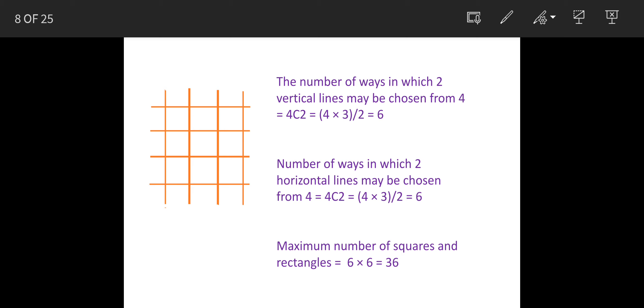So we will see the solution. Now the number of ways in which 2 vertical lines can be chosen from 4 is 4C2. So 4C2 will be factorial 4 divided by factorial 2 and again divided by factorial 4 minus 2. So when we solve this we will get this as 6.